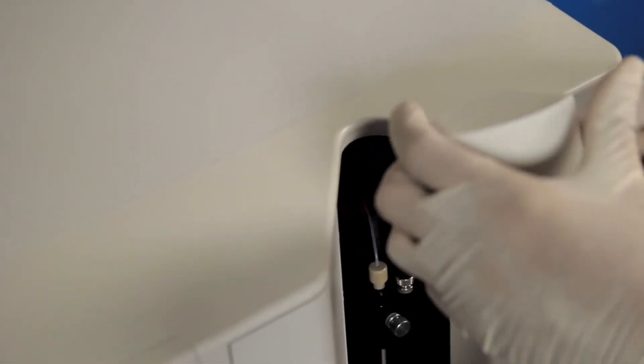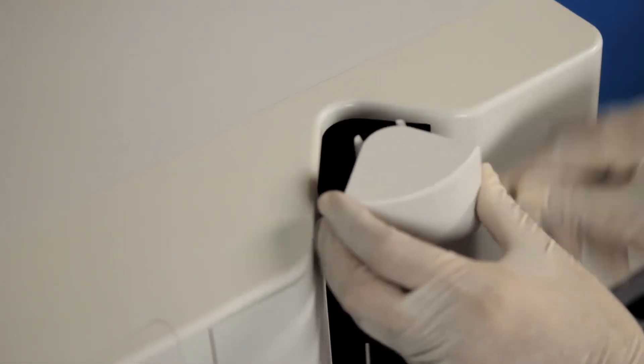Next, reinstall the light housing by pushing it until it snaps into place. Take care not to pinch the clear sample tubing as you install the light housing.